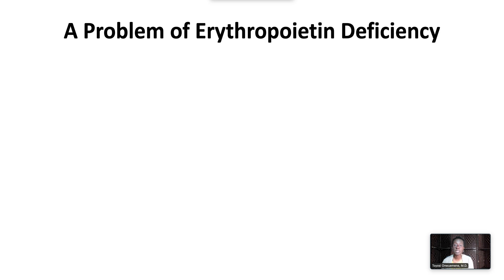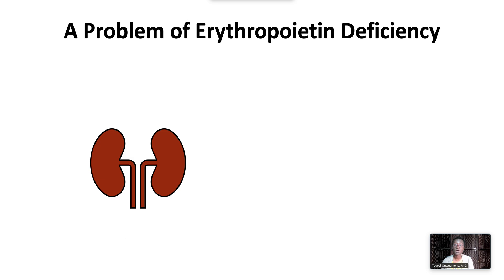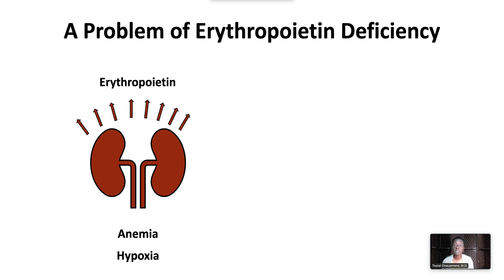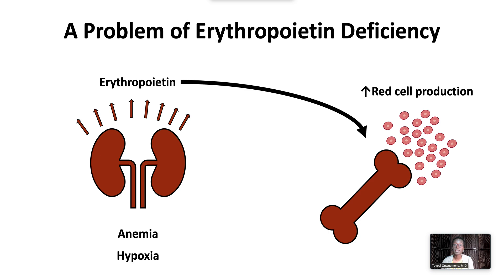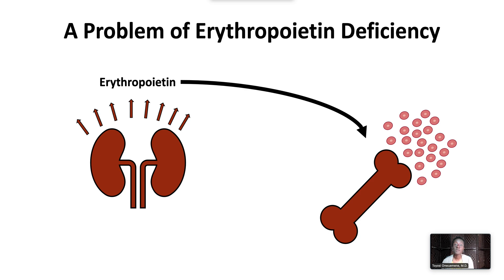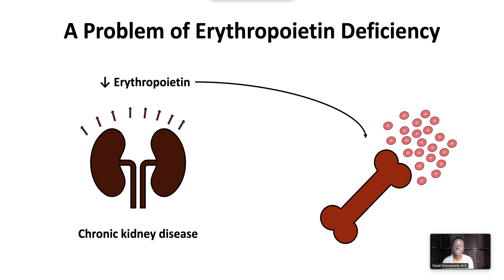Anemia of kidney disease is a problem of erythropoietin deficiency. The kidneys respond to anemia and hypoxia by producing erythropoietin in the renal cortex. Erythropoietin acts in the bone marrow to increase red blood cell production. When there is chronic kidney disease and the glomerular filtration rate declines, erythropoietin production also declines, leading to decreased red cell production and anemia.